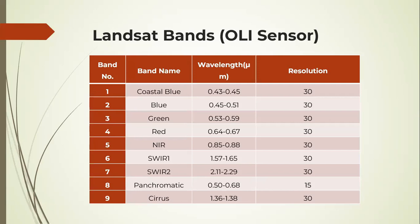Band 2 is blue, band 3 is green, 4 red, 5 near infrared, 6 is shortwave infrared 1, 7 is shortwave infrared 2, 8 is panchromatic, and 9 is the cirrus band.